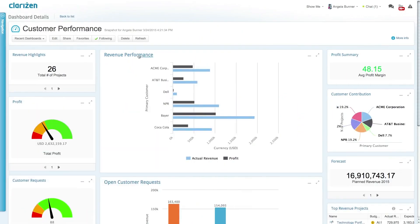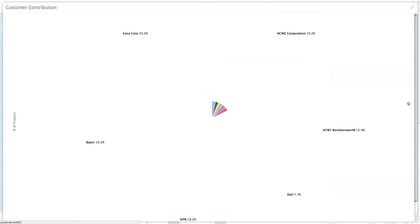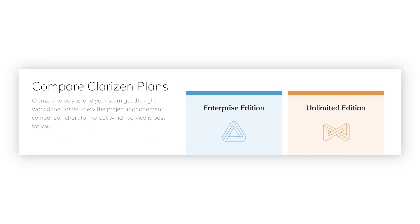A few features that Clarizen provides include: one, centralized project and portfolio management, where you can organize complex projects and automate workflows; two, change and issue management, where you can track, manage, and prioritize change requests and resolve issues; and three, resource optimization and robust collaboration, where you are able to execute on feedback and test in real-time to streamline how you work. Clarizen offers a 30-day free trial, as well as enterprise and unlimited edition plans on their website that require pricing requests.